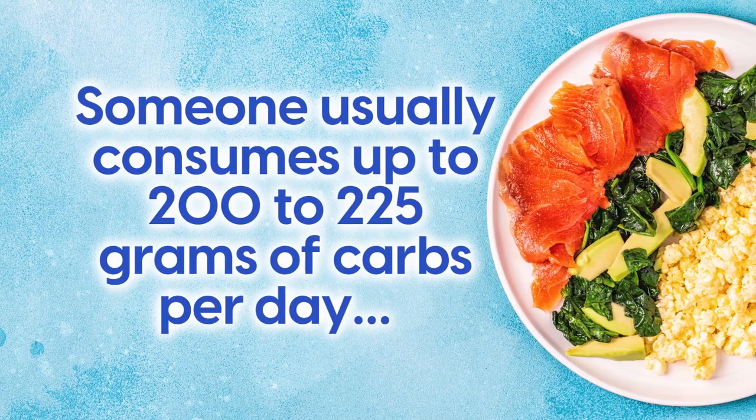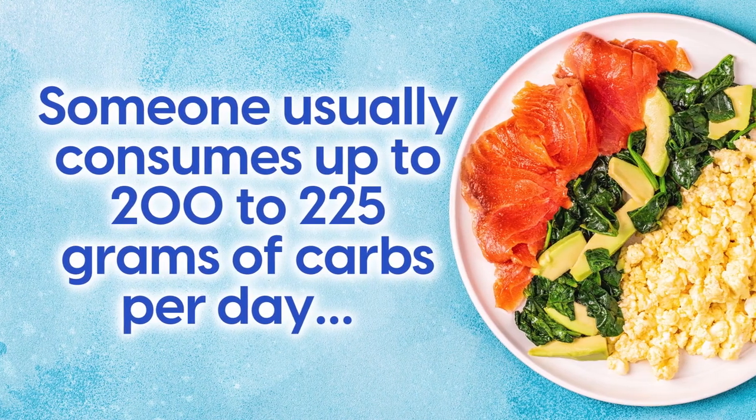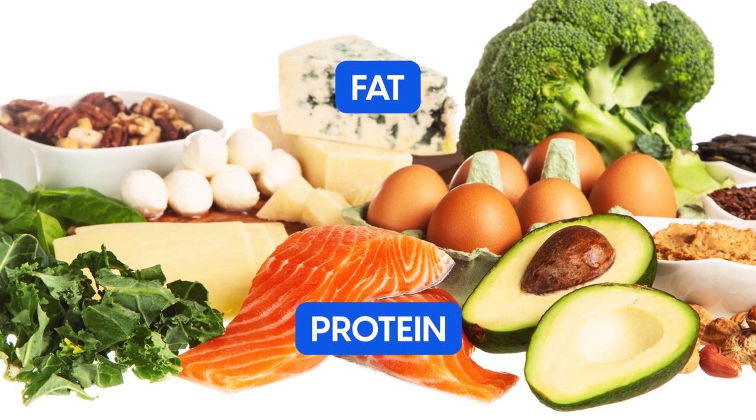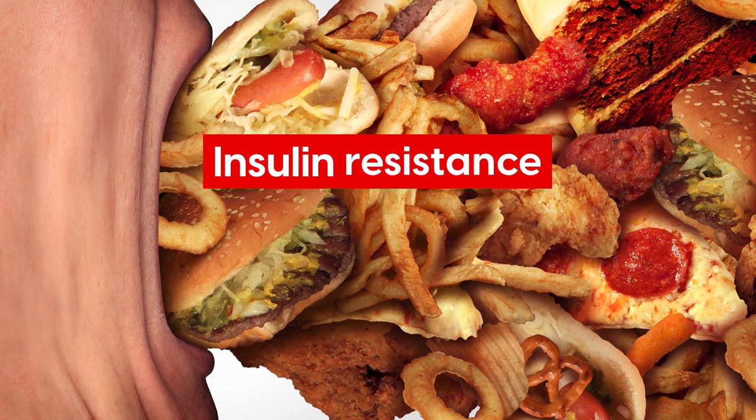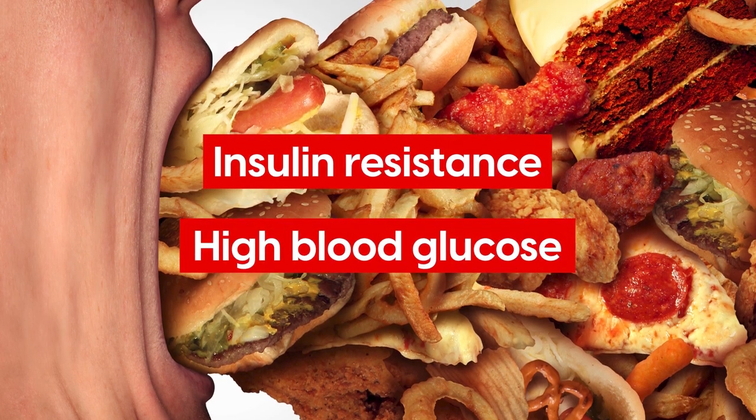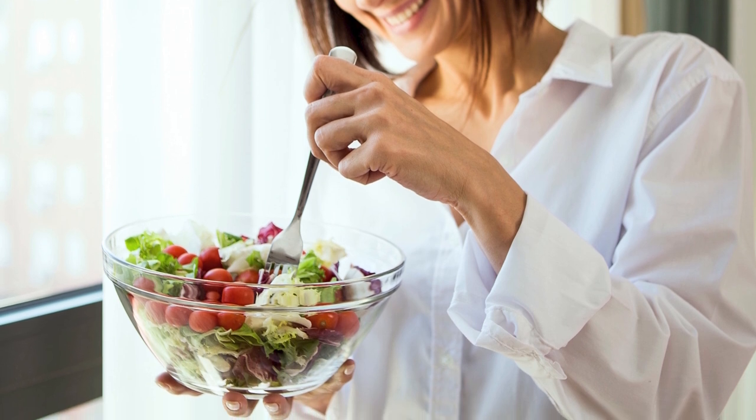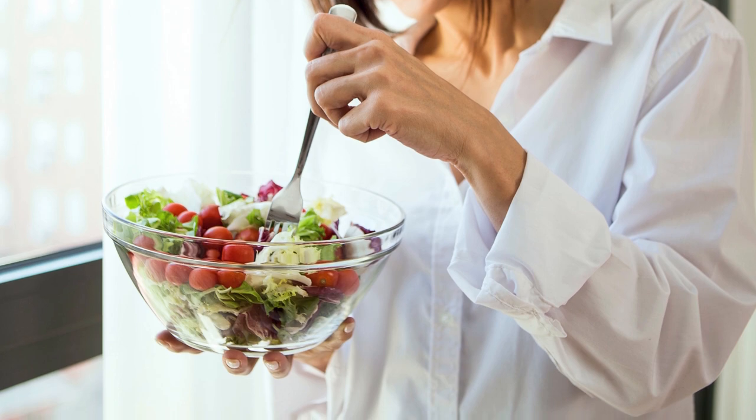On a diabetic-friendly diet, someone usually consumes up to 200 to 225 grams of carbs per day, along with a balanced amount of fat and protein. Carbs are often the bad guy when it comes to insulin resistance and high blood glucose. So it is easy to assume that significantly reducing your carbohydrate intake could help your diabetes.